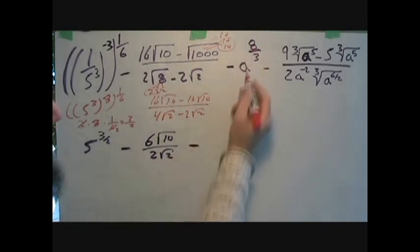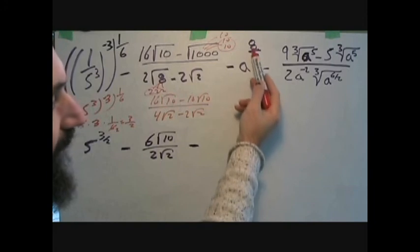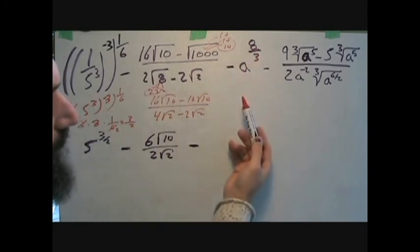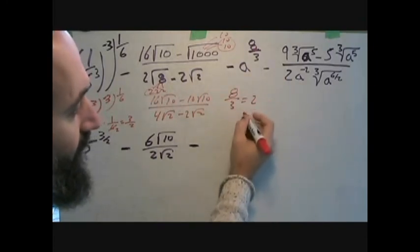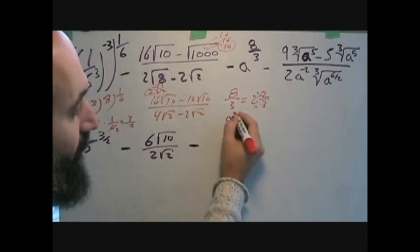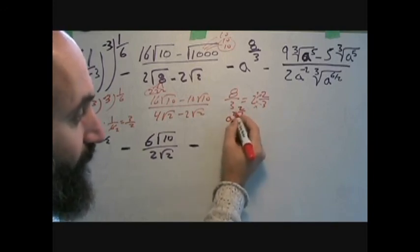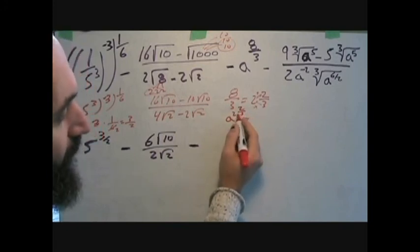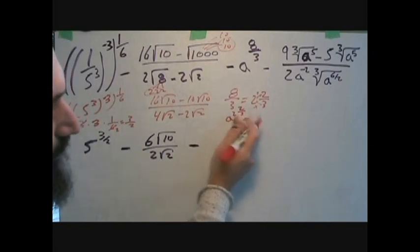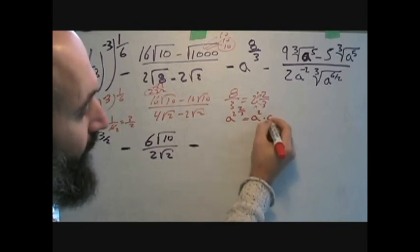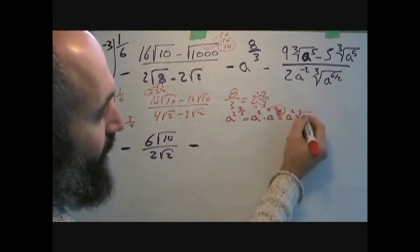Now let's deal with a to the power of eight-thirds. One way to handle this is to convert it to a mixed fraction: 3 goes into 8 twice with 2 left over, so this becomes a to the power of 2 and two-thirds. Using the multiplication principle — if you have two exponents with the same base you can split it — this becomes a squared times a to the power of two-thirds, and a to the two-thirds with the 3 in the radical becomes the cube root of a squared.